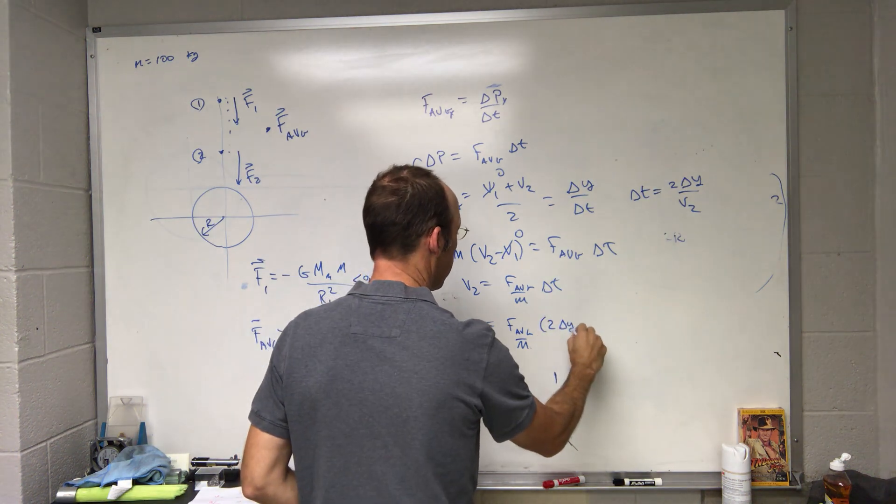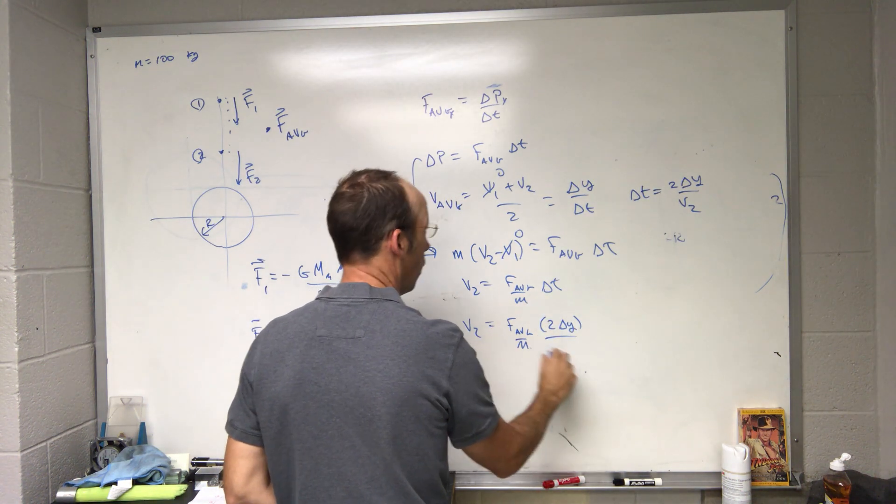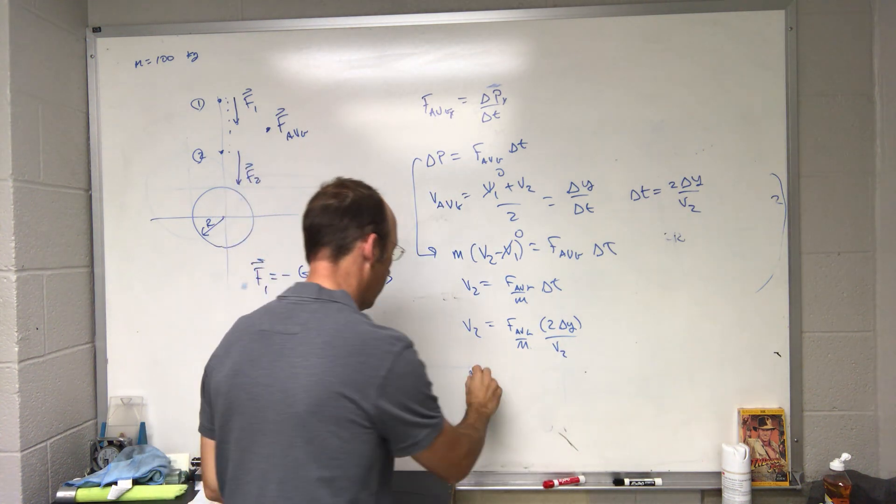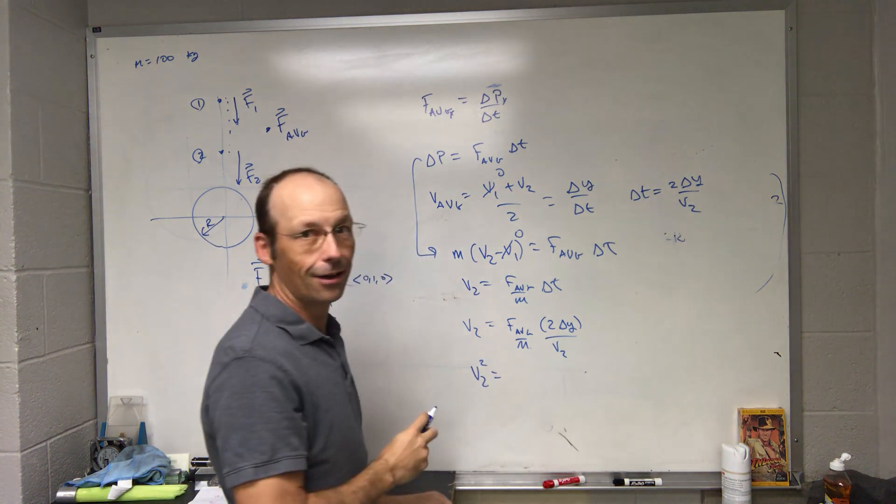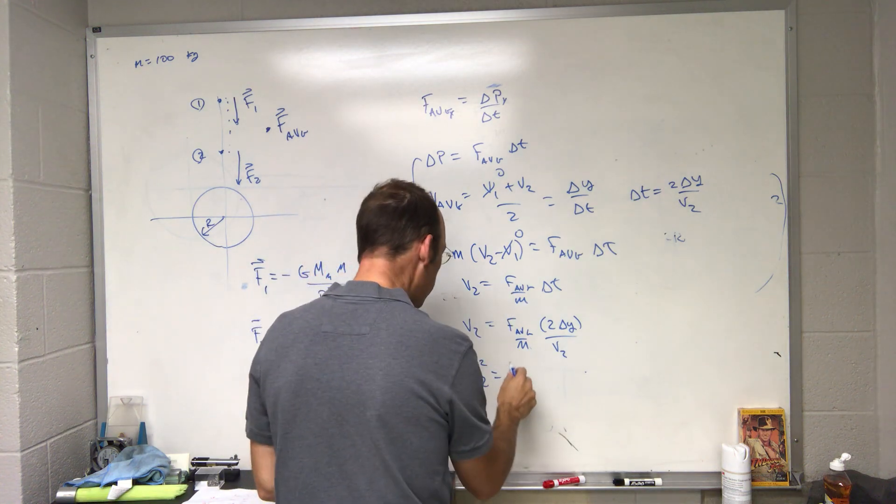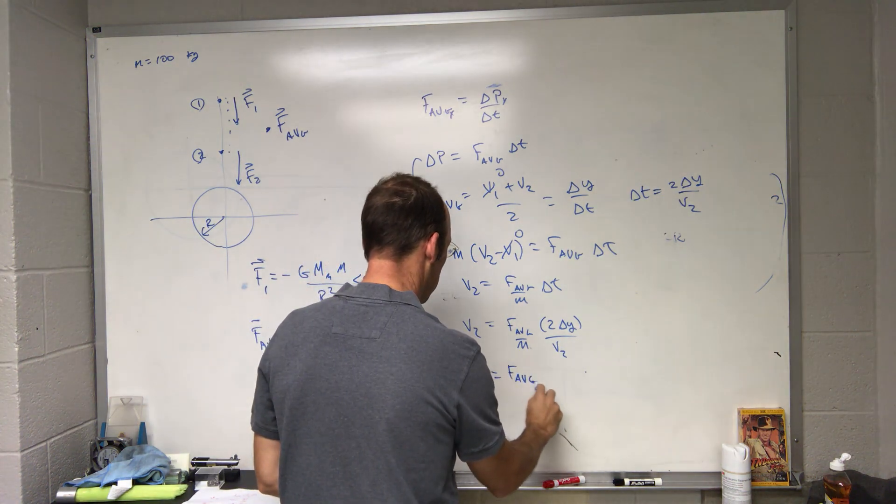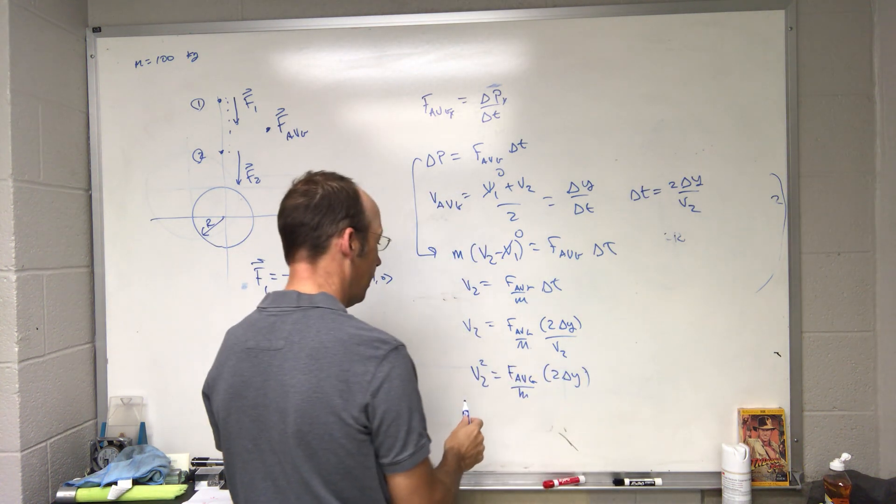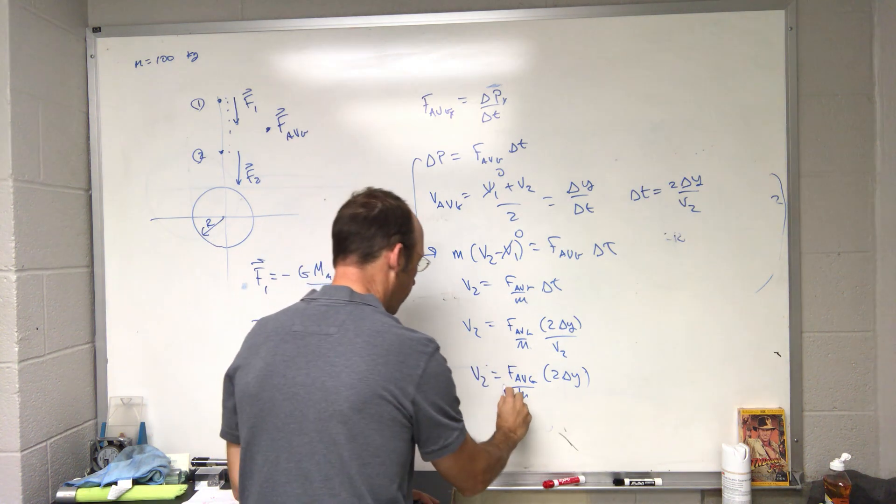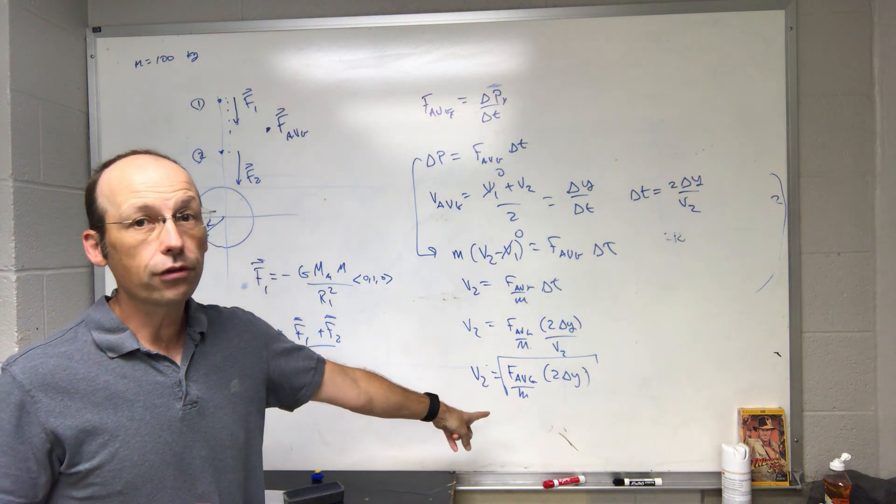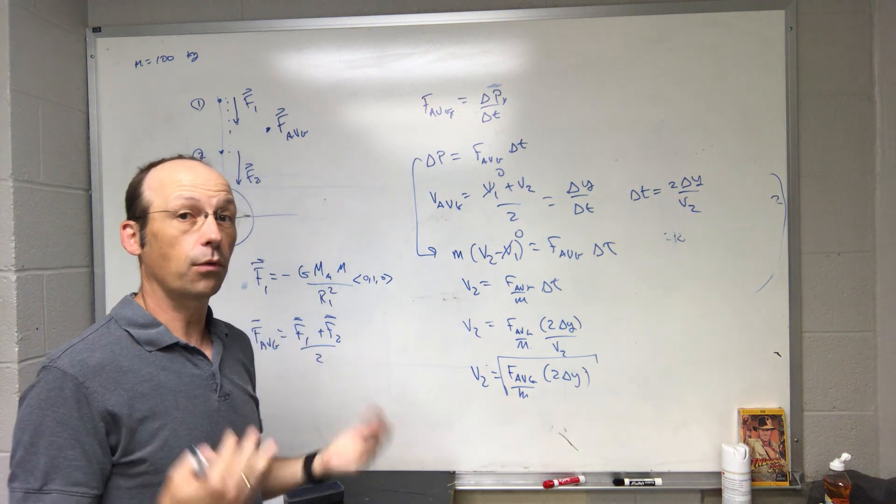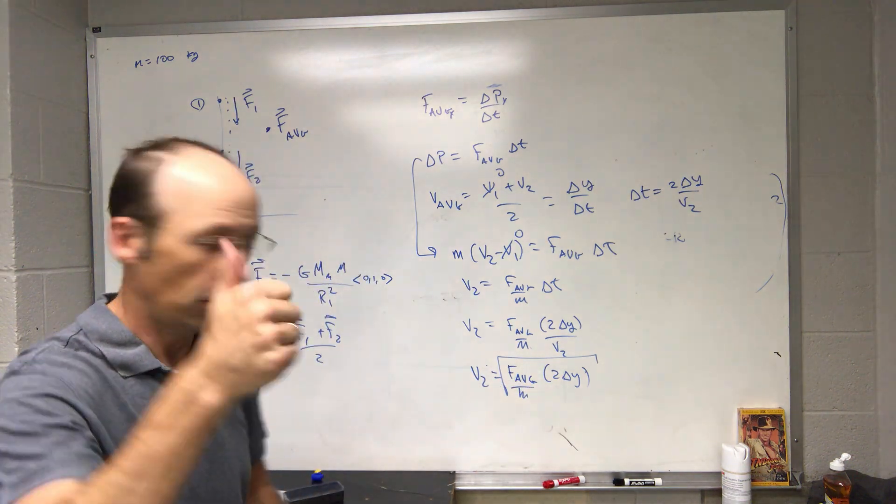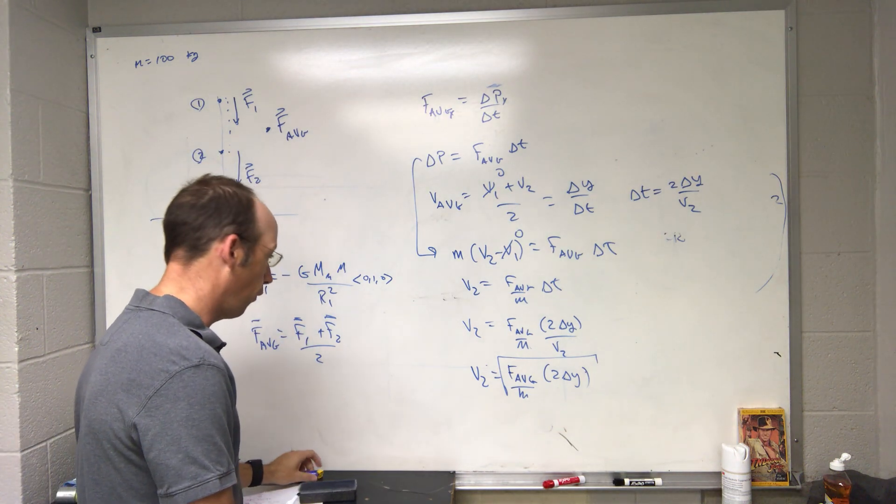Now I want to solve for v2. Multiply both sides by v2 and I get v2 squared. I know it's a lot of work, but I told you it wasn't the best way. V2 is F average over m times two delta y. And then I can take the square root of both sides. And if that looks familiar, you say oh well there's a kinematic equation. It is the kinematic equation, but it doesn't have time.